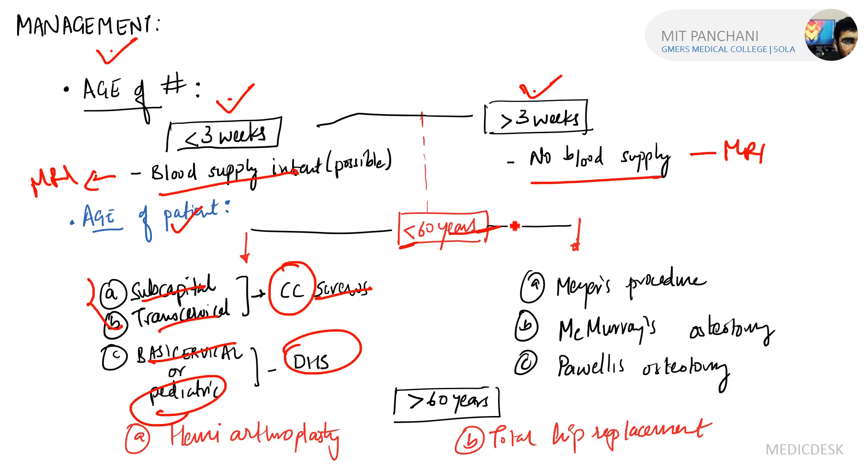If the patient is less than 60 years but the fracture is more than three weeks old, you have these procedures: Meyer's procedure, McMurray's osteotomy, and Pauwels osteotomy. If more than 60 years, use hemiarthroplasty or total hip replacement. This was all about management of fracture of the femur neck.